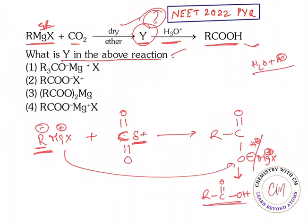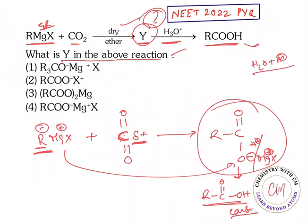Here we are seeing a carboxyl group formed. So Y is nothing but R-C(=O)-O⁻ MgX, that is R-COO⁻ MgX. So option 4 is the right answer.